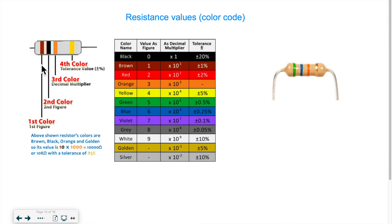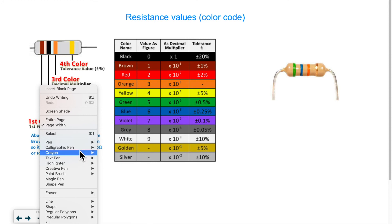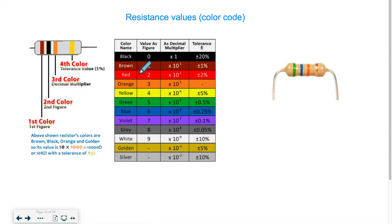So how does the color code work? So we have, in this case, three colors. So we have brown, black, orange. So this is the first figure, this is the second figure, and this is the multiplier. What do I mean by this? So let's take a look at the colors. The first one is brown. So brown represents one. So brown is one, followed by the second color, which is black. Black is zero. So one, zero. And we say multiplier. What we mean by that is times 10 to the something, times 10 to a certain exponent, which is the third color. So times 10 to the three. And that would give me 10,000 ohms.